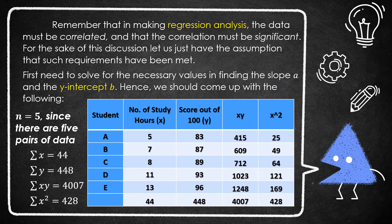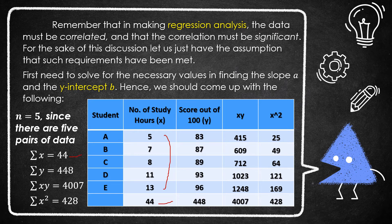Before we proceed with our initial computation, remember that in making regression analysis, the data must be correlated and the correlation must be significant. Like what we did in the previous discussion, we first need to solve the necessary values in finding the slope and y-intercept. We have n equals 5. We need to get the summation of x, so we add 5 to 13, which is 44.